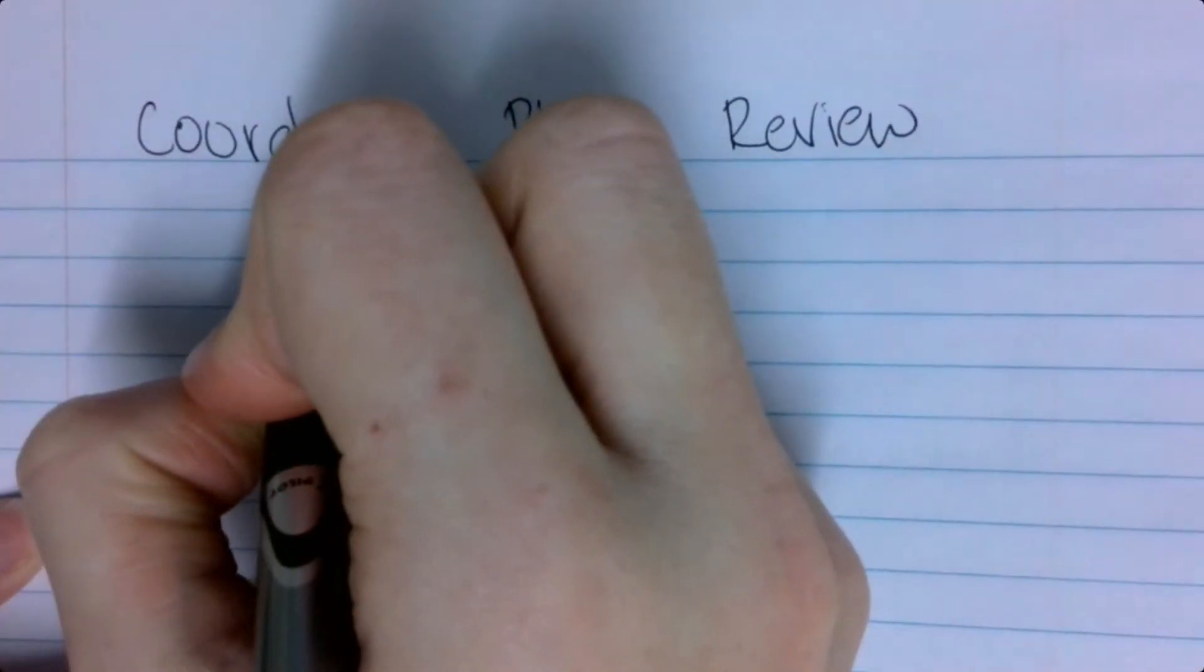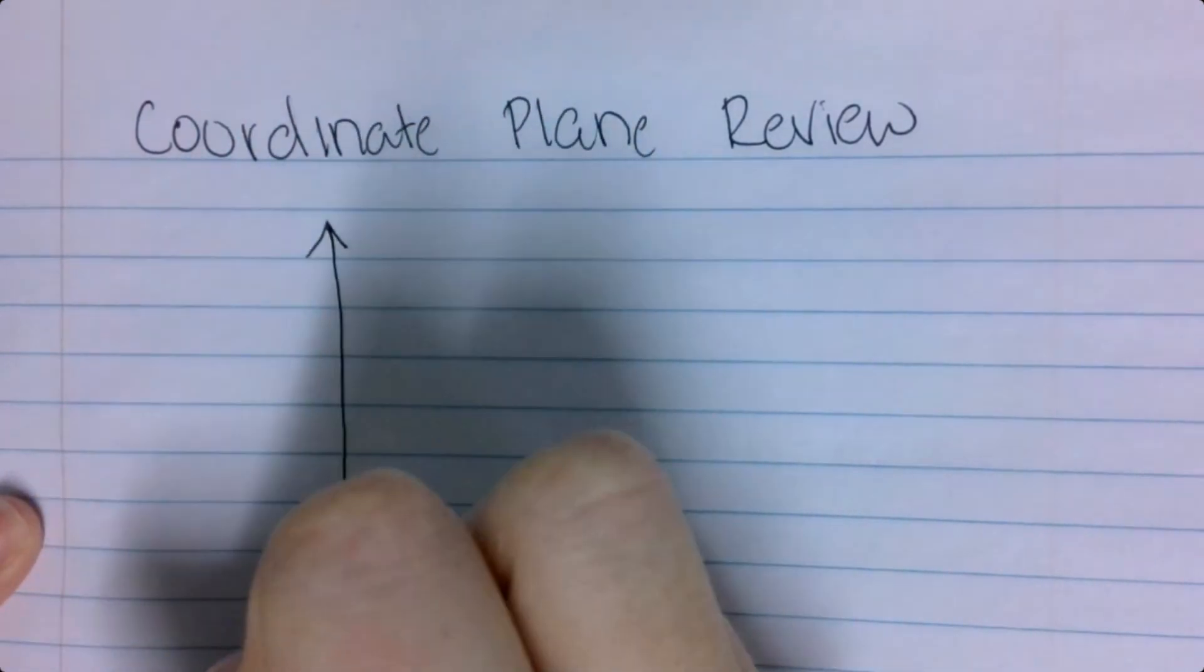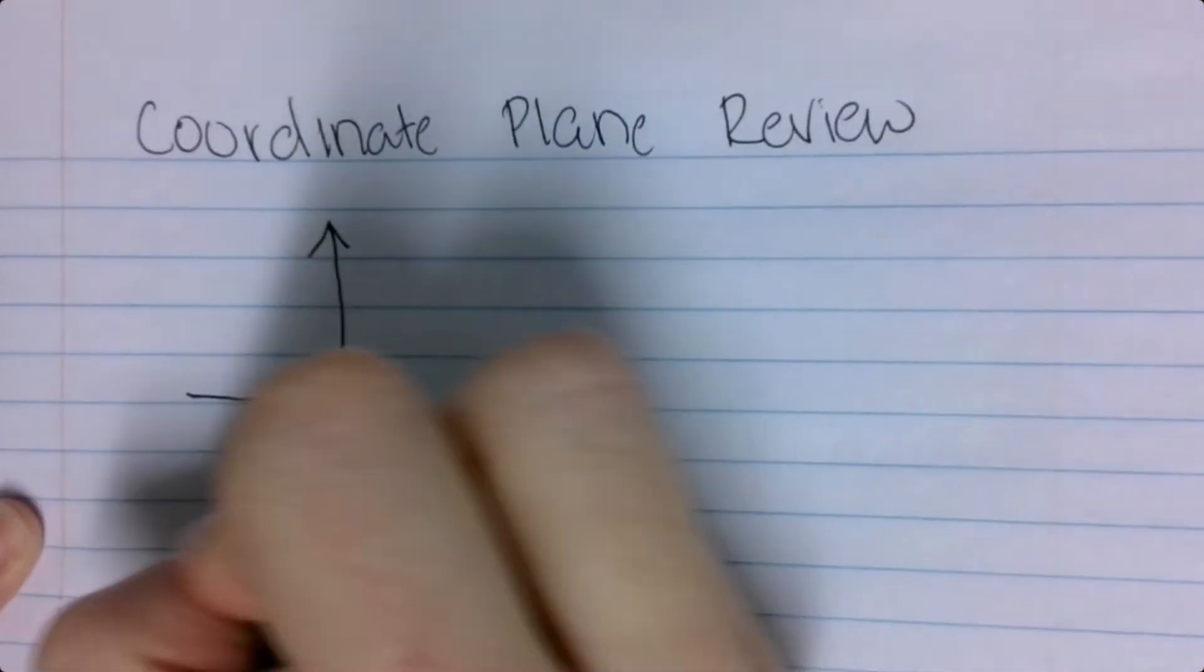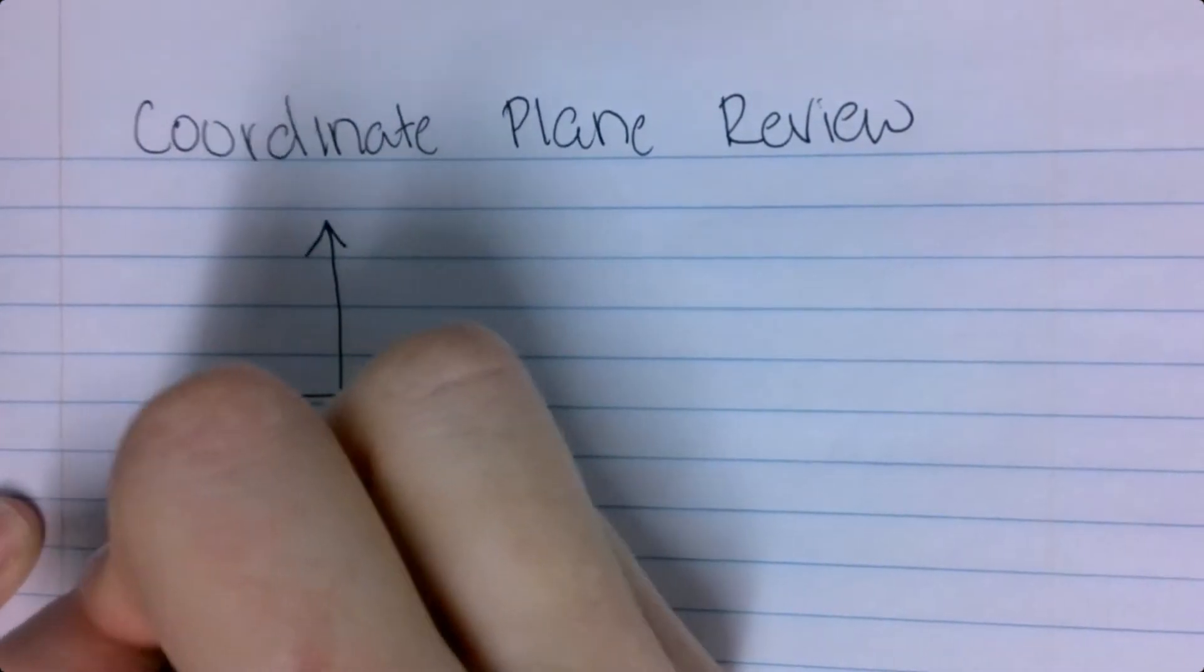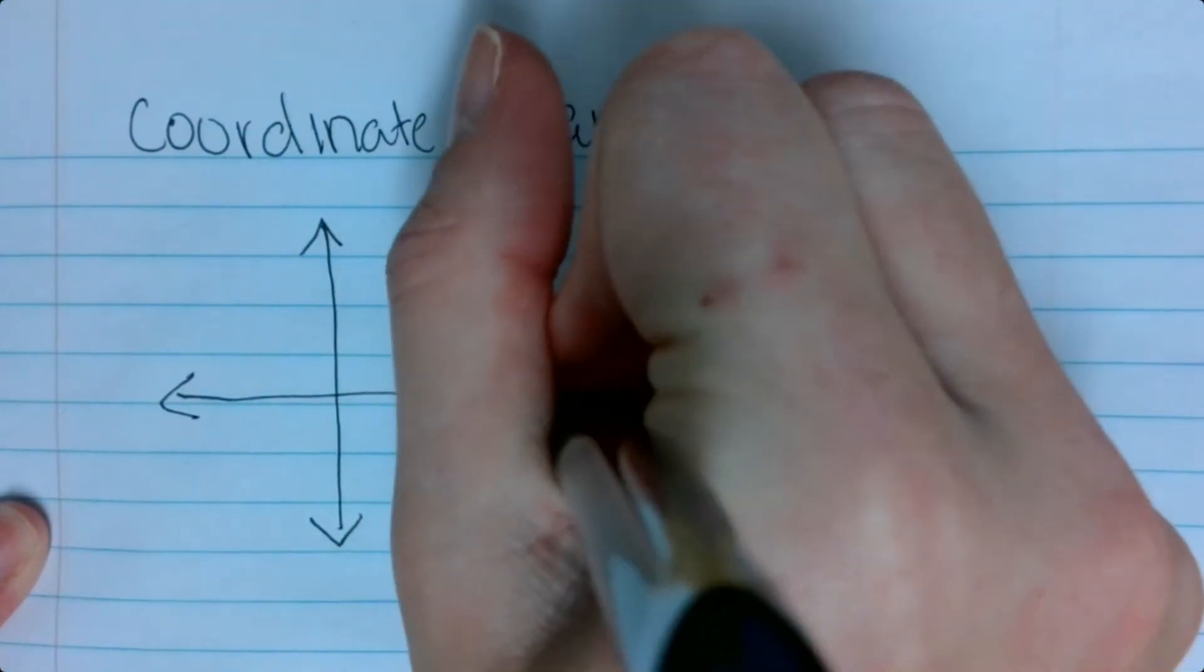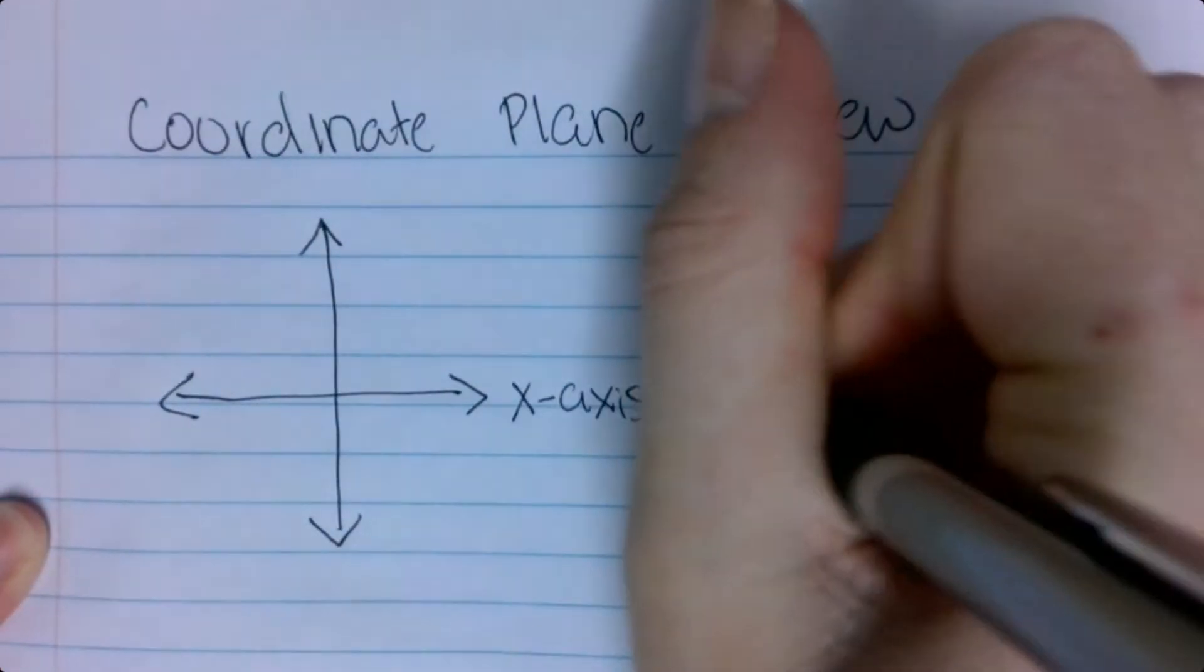So remember, we're going to start by drawing ourselves a coordinate plane. Left to right, we are going to label the x-axis. Up and down, we are going to be labeling the y-axis.